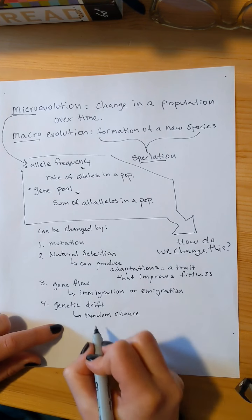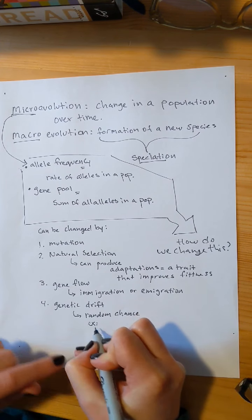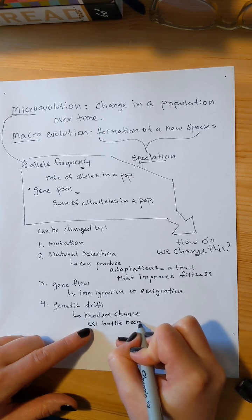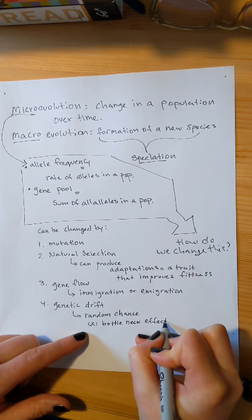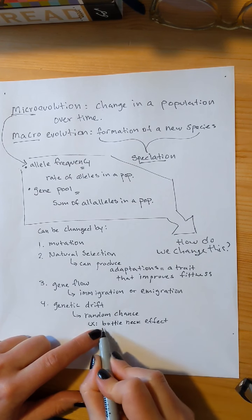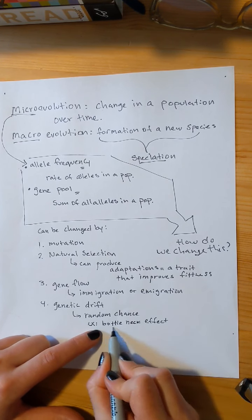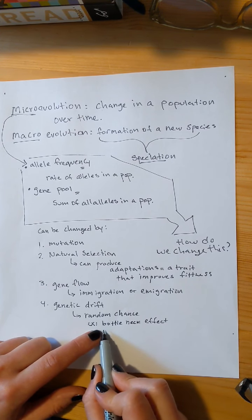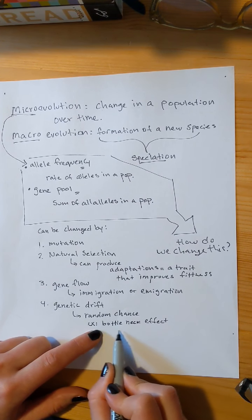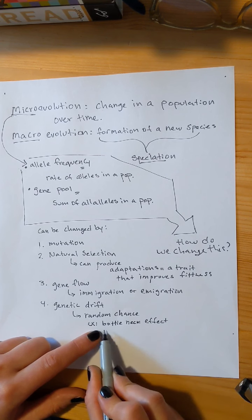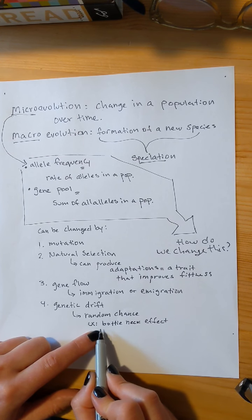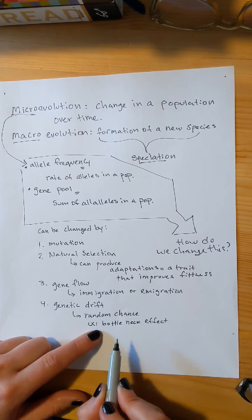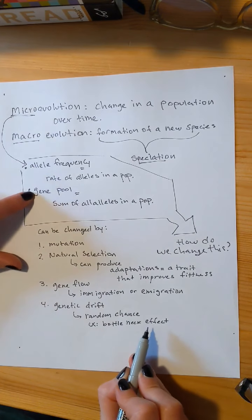When we're thinking about genetic drift, we have a couple examples that are important. One example is called the bottleneck effect. In the bottleneck effect, only a small portion of your original population survives some kind of catastrophe. So let's say that there is a new disinfectant that you use on your kitchen counter, and it kills most of the population of bacteria, but not all. That would be a bottleneck effect. Whatever is left over is not a good representation of what you used to have, and so you've changed the allele frequency and the gene pool.